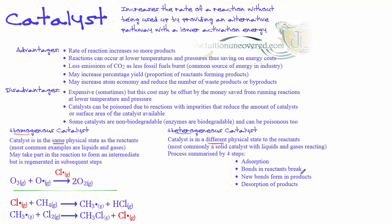Bonds in the reactants break, allowing those reactants to then temporarily be attracted to the surface of the catalyst. That allows new bonds to be formed in products because those are more favourable energetically. As a result, the products desorb — being released — from the surface of the catalyst. So: adsorption of the reactants onto the surface of the catalyst, bonds broken in those reactants, new bonds formed to make the products, and the products desorb from the surface of the catalyst.